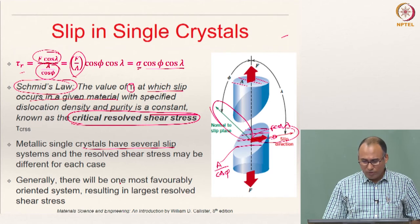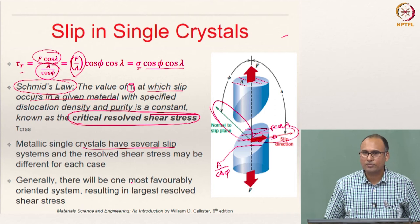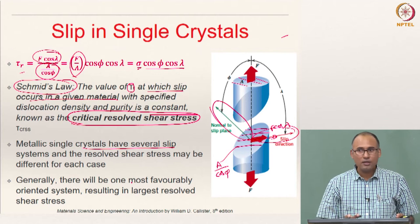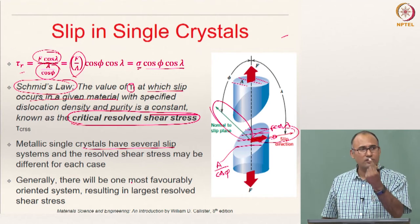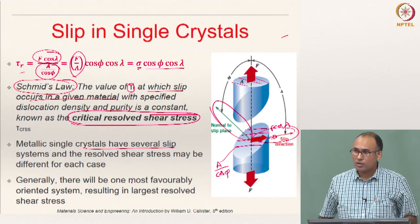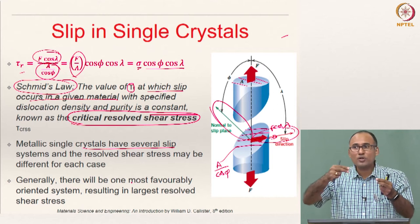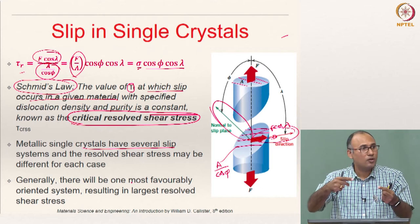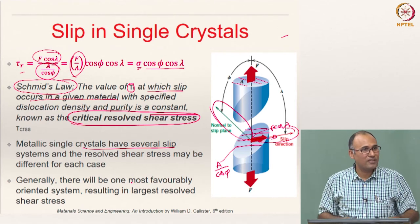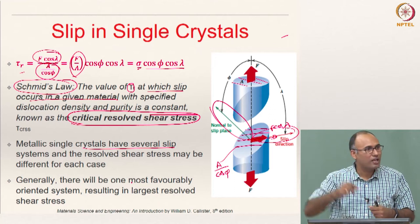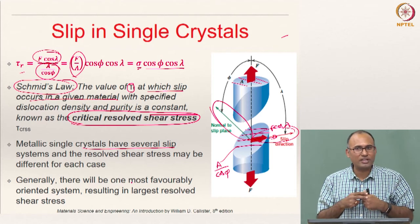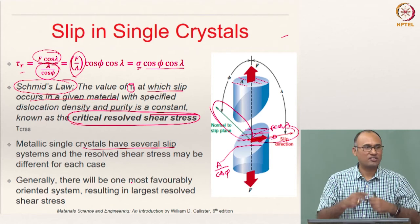In general, there will be one most favorably oriented slip system. Amongst all the possible slip systems, there will be one along which slip takes place. A slip system is considered favorably oriented when its resolved shear stress is maximum compared to all other slip systems. When that resolved shear stress becomes equal to the critical resolved shear stress of the material, that is when slip occurs.